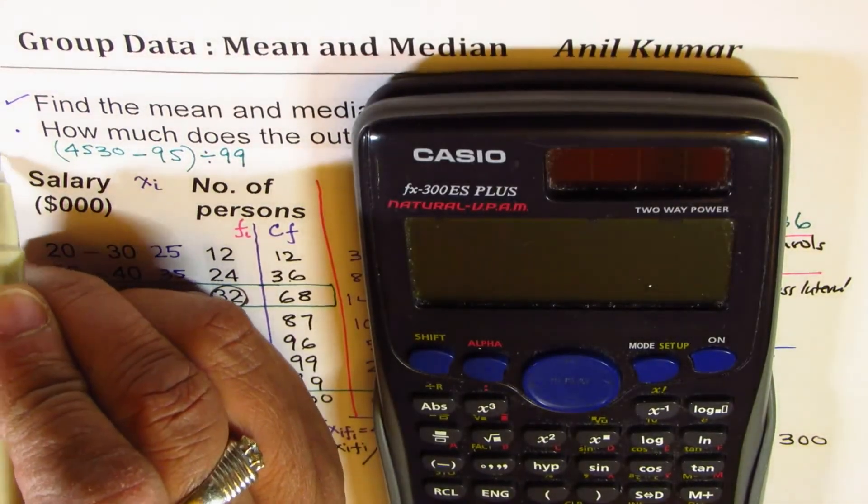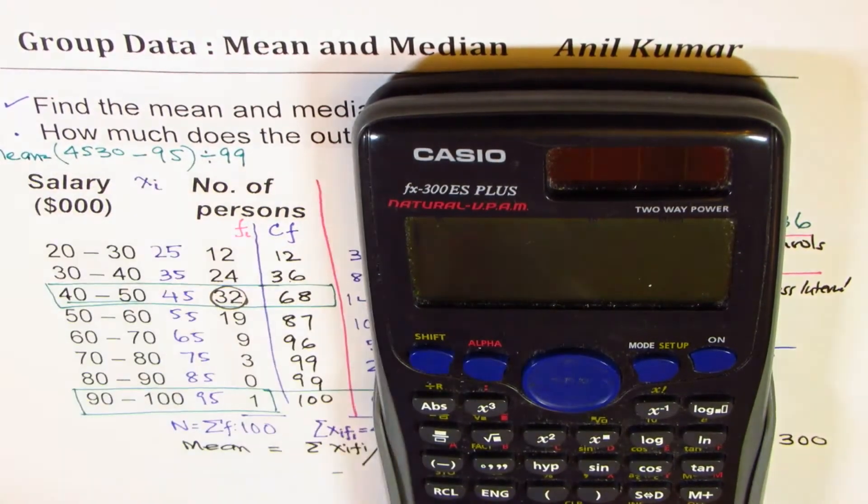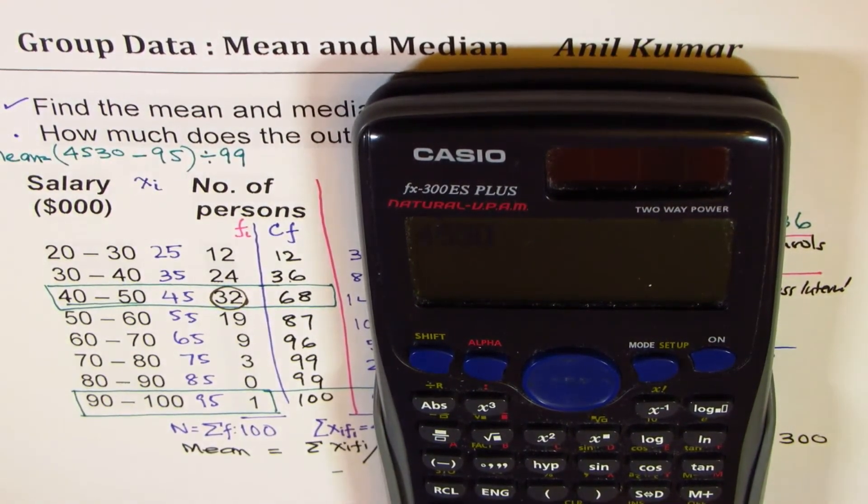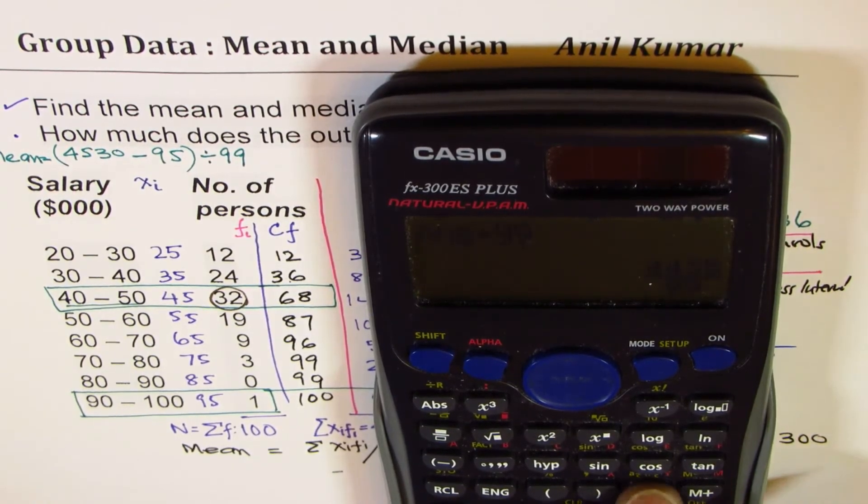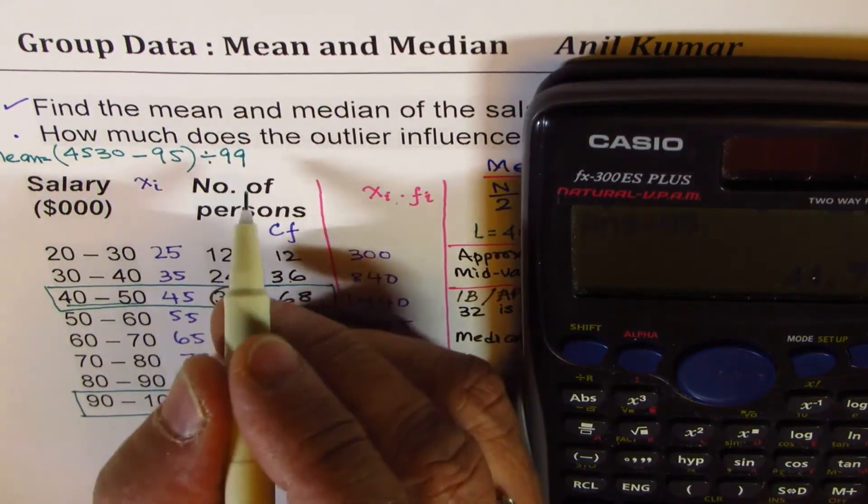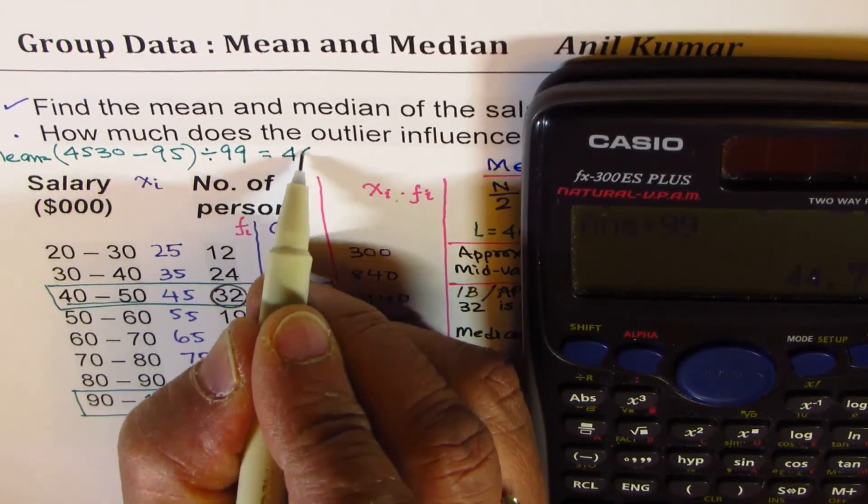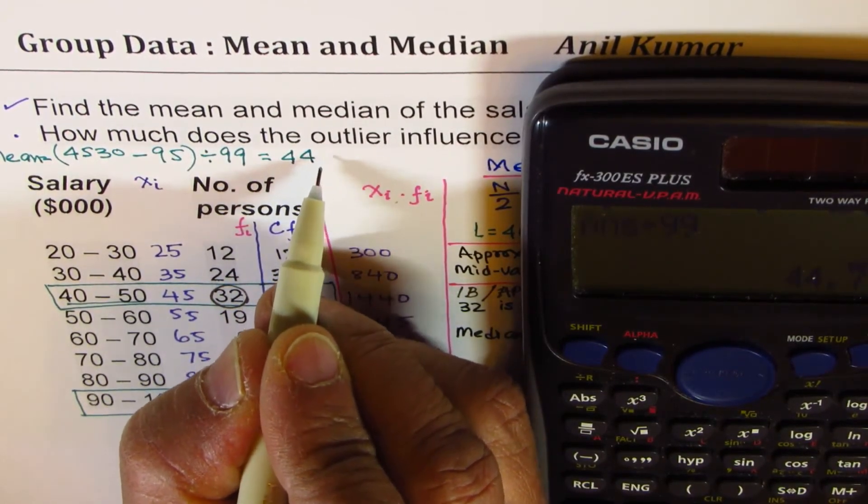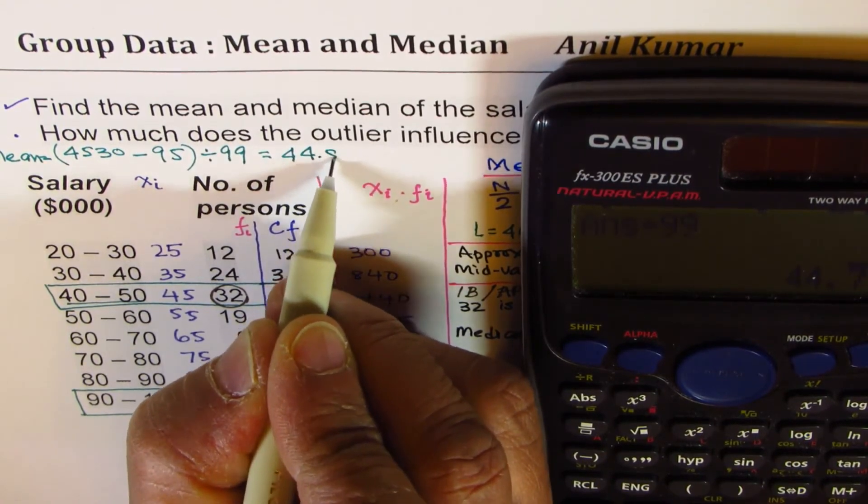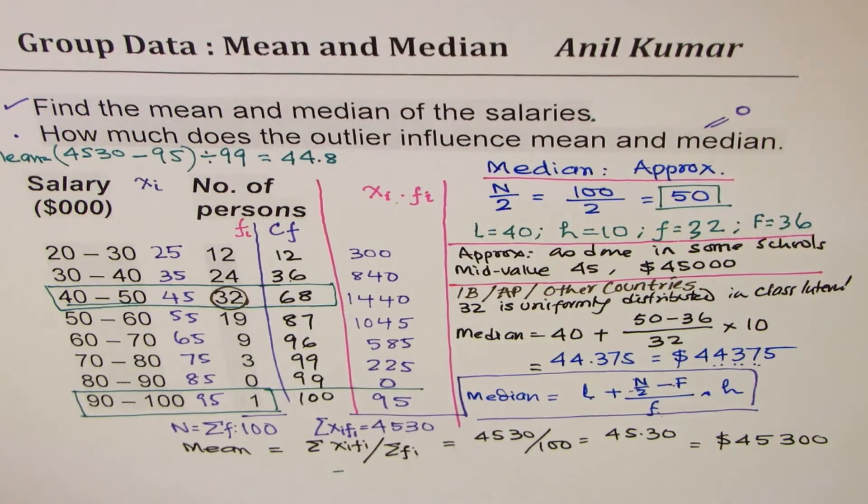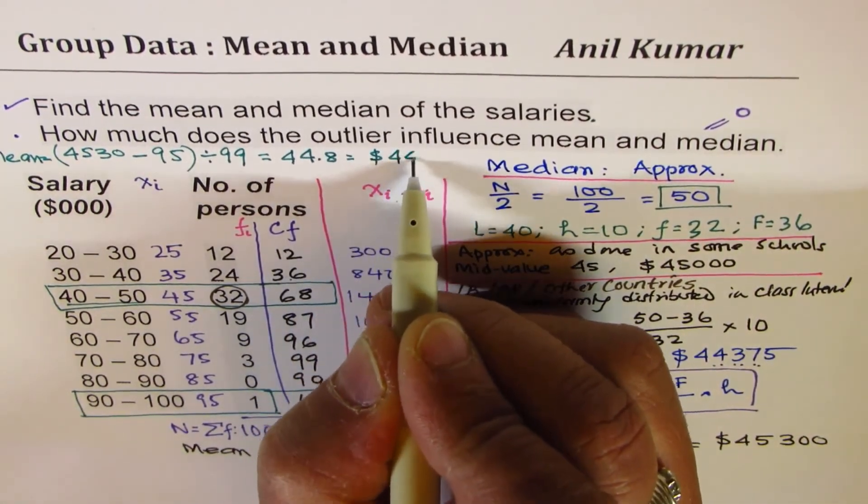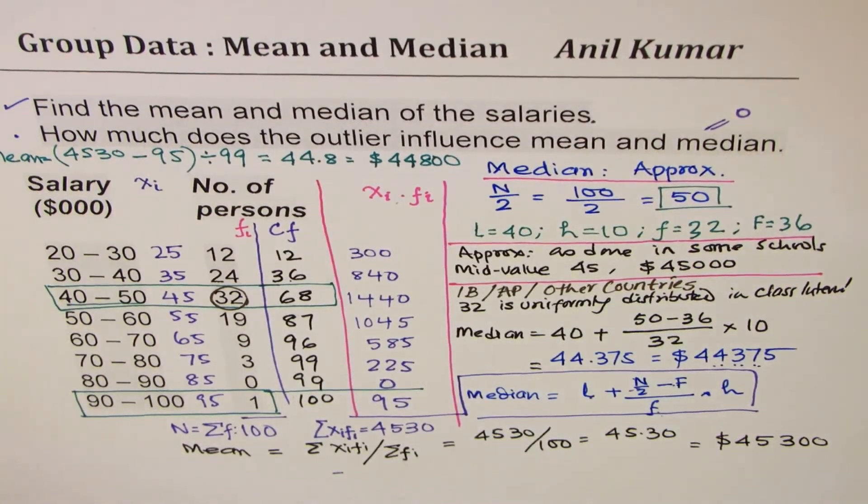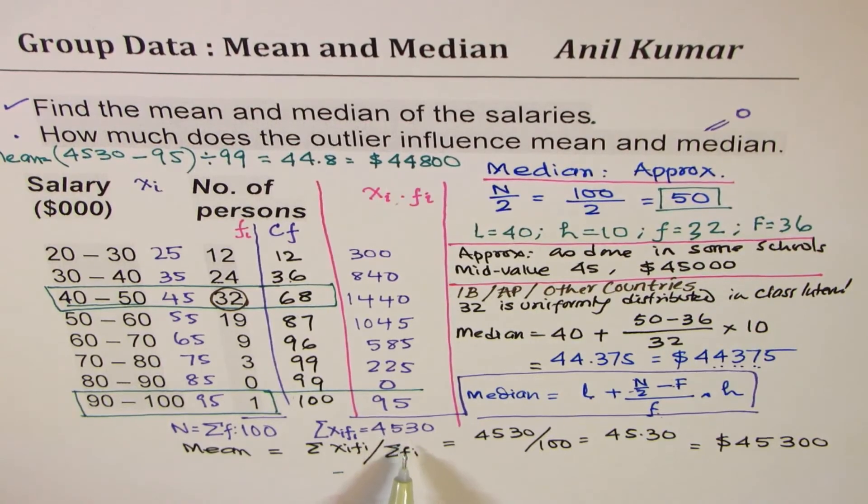So let's calculate again the mean. We have 4530 take away 95, so that is the total sum, and we're dividing this by 99. In decimals, we get 44.8. So thousands, if I add, that's $44,800 approximately. Earlier was $45,300.